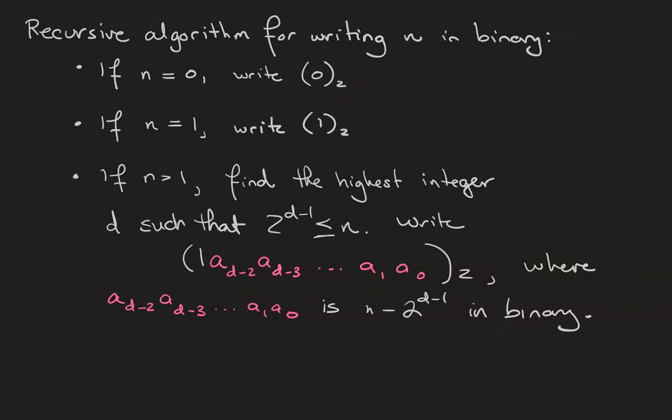We're going to have a recursive algorithm for writing a number in binary. If n is 0, we're going to write down 0 as its binary expansion. If n is 1, we're going to write 1 as its binary expansion. These two lines are typically the base case in a recursive algorithm. You always need to know where to stop, or else you'll just keep going down forever.